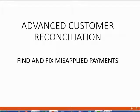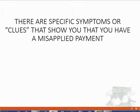The most complex type of mistake to find and fix is a misapplied payment. This means that either you or the customer applied one of the customer's payments to the wrong invoice. There are specific symptoms or clues that show you that you have a misapplied payment. If you see these conditions, you can have confidence that you know what the problem is and you learned in this video how to fix it.